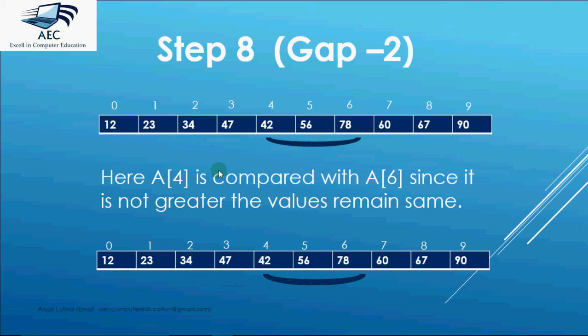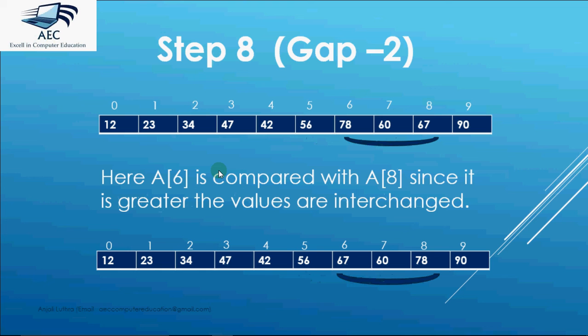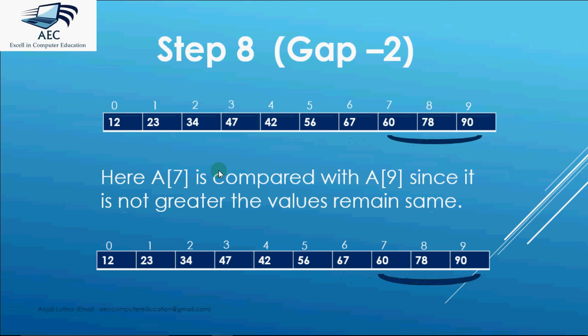A[3] with a[5], a[4] with a[6], a[5] with a[7] and then a[6] with a[8]. Here 78 is greater than 67 so we make a swap. Then a[7] is compared with a[9]. End of step 8.